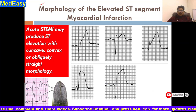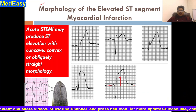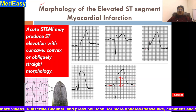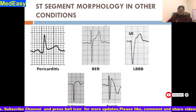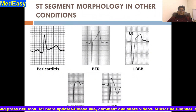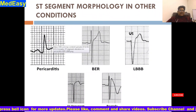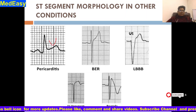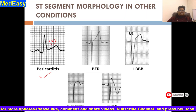Looking at the ECG, the ST is typically elevated above the baseline. In pericarditis, the ST elevation typically shows an upward concavity — the concavity is directed upward. This is the typical morphology seen in pericarditis.